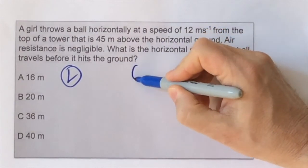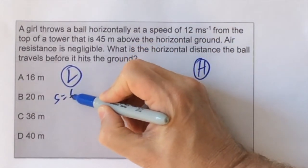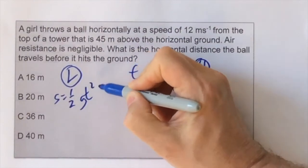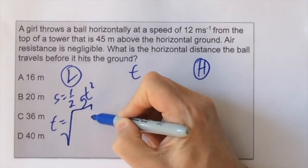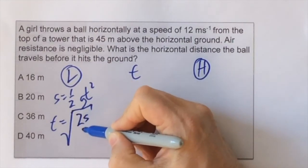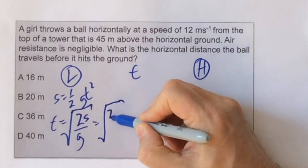So vertically we know there's no initial vertical velocity, so s equals ut plus half at squared, the first term can disappear. We can reorganize s equals half gt squared into t equals the square root of 2s over g. When we substitute in there, we find that the time taken until it hits the bottom is three seconds.